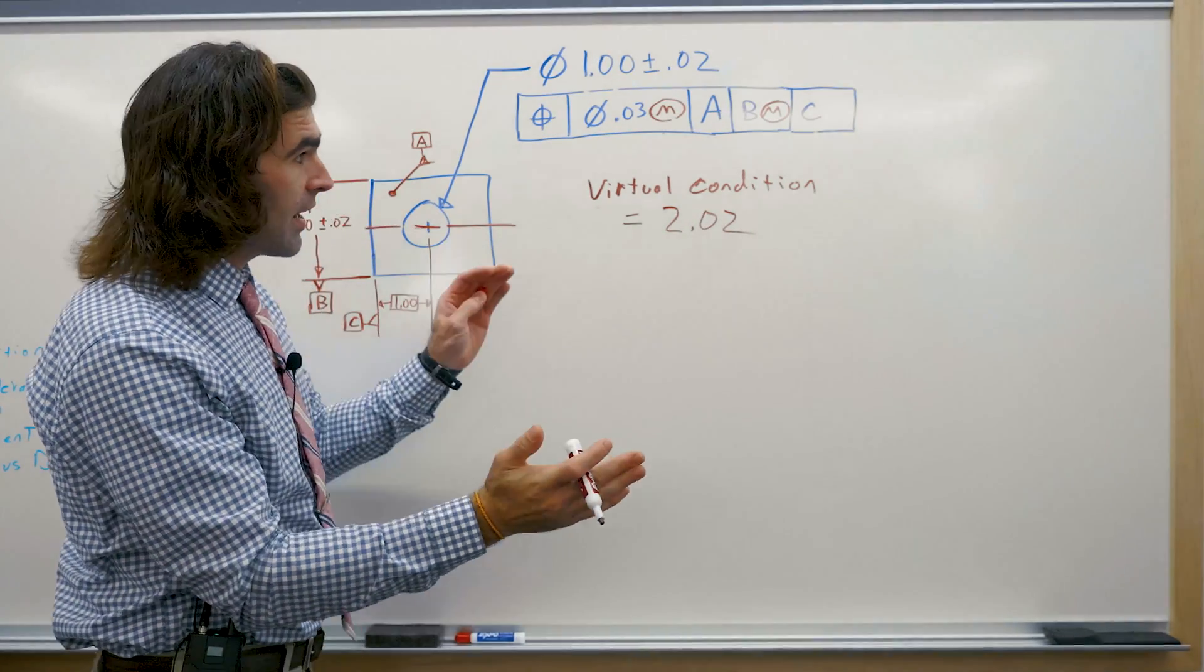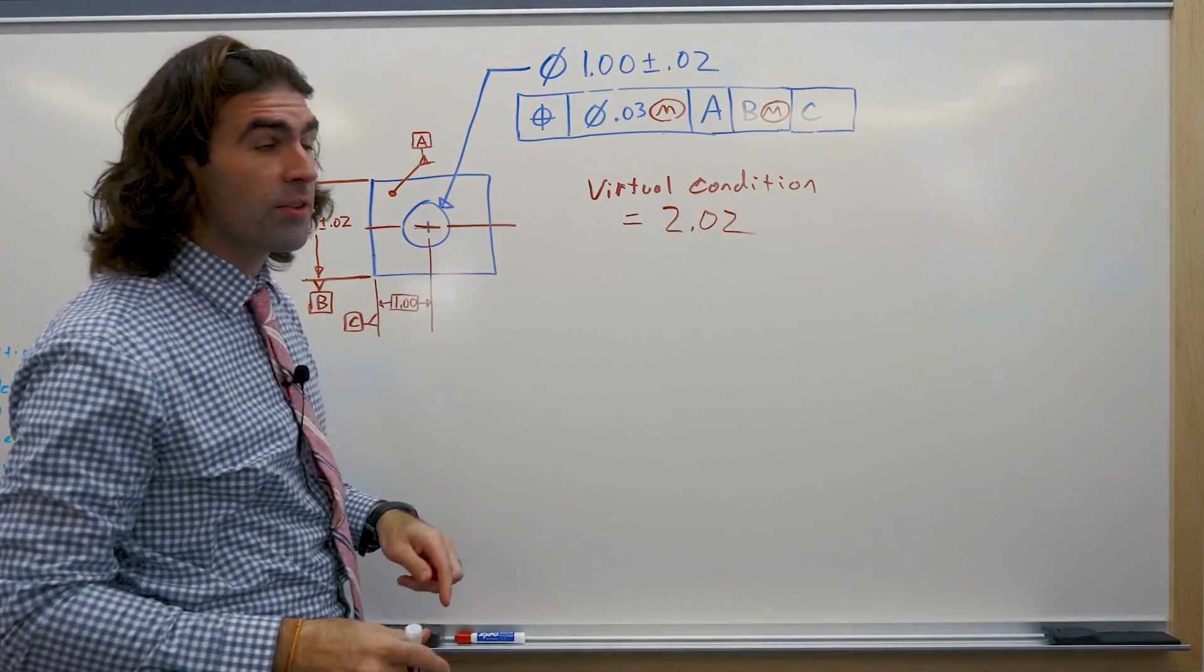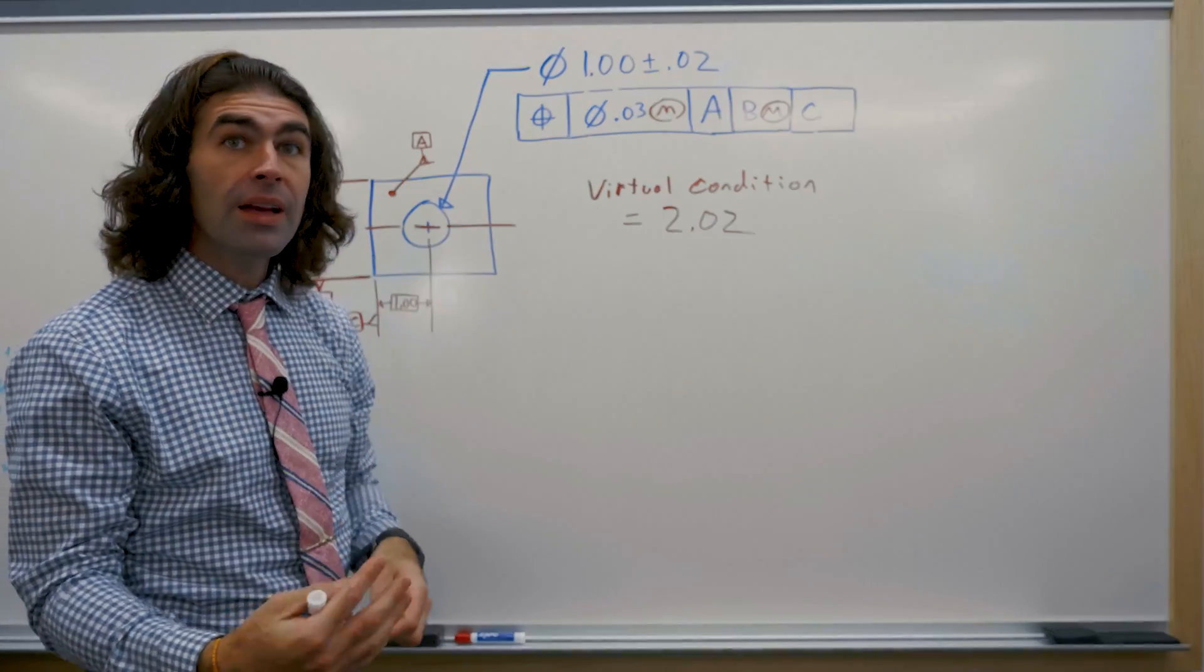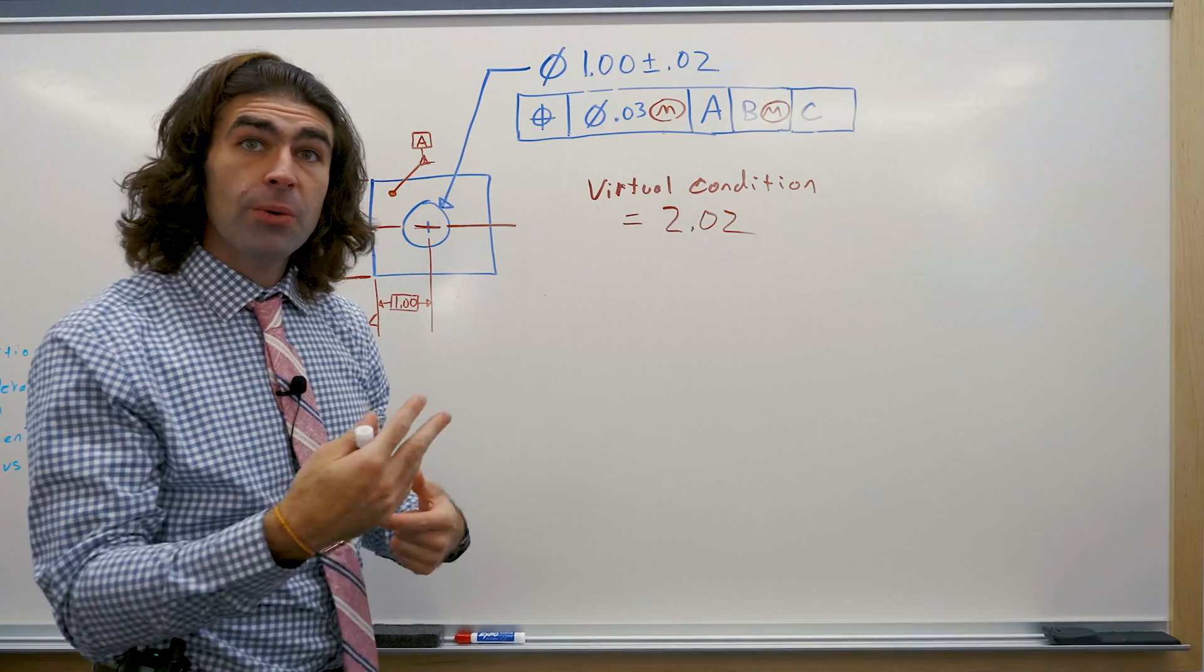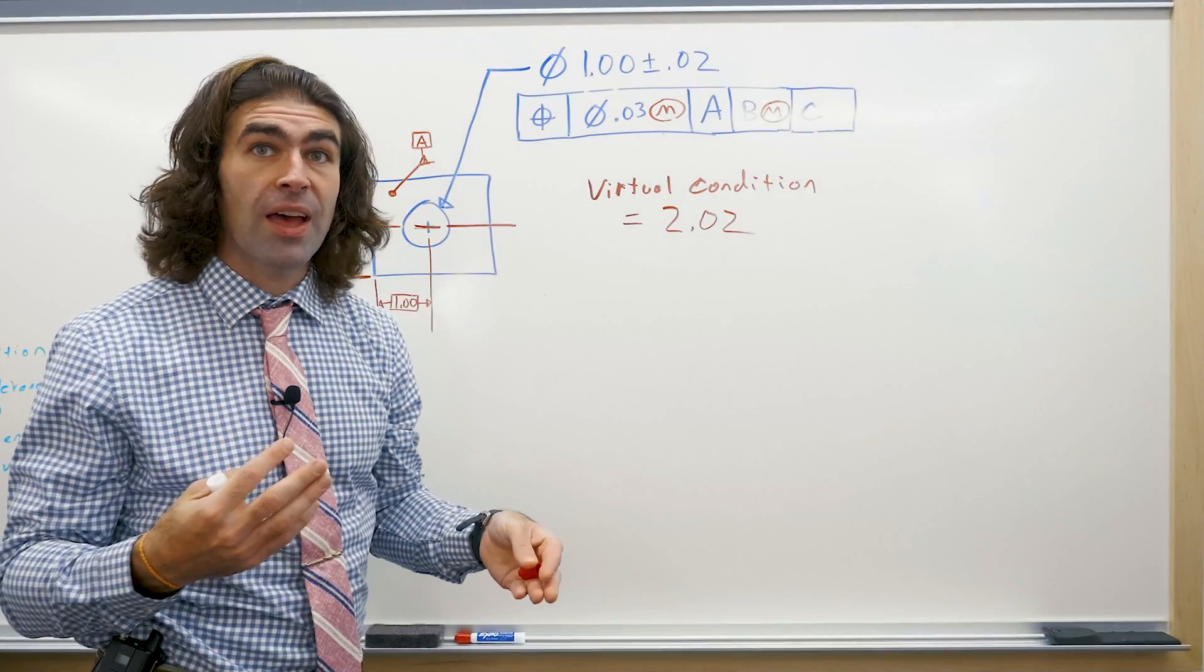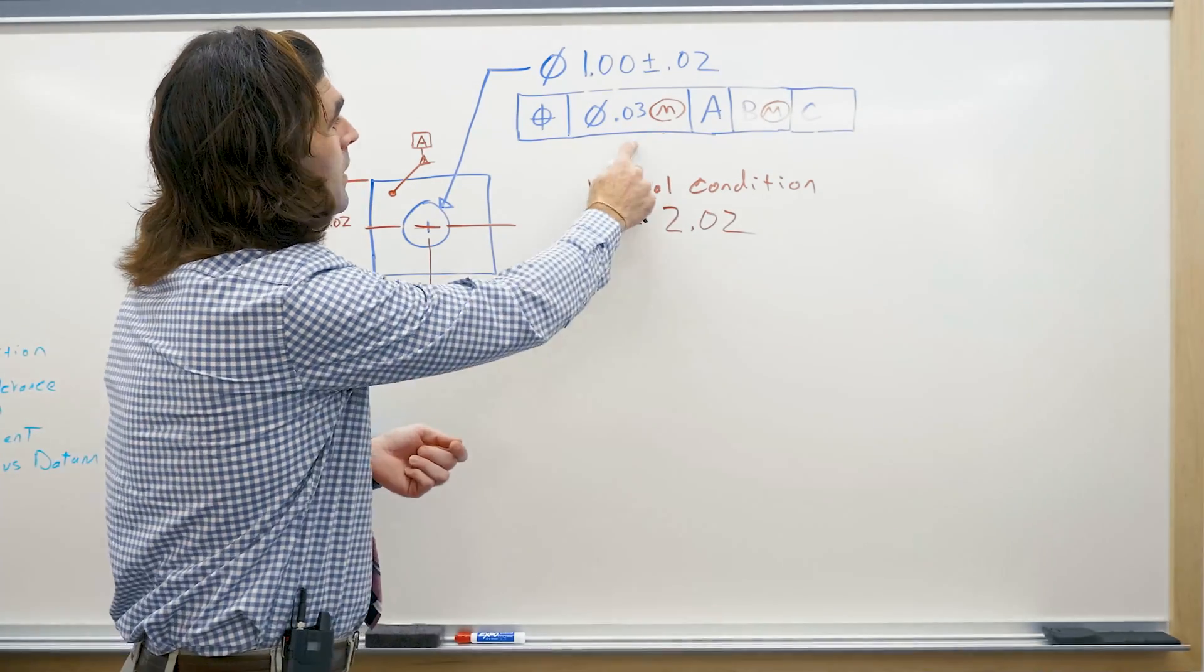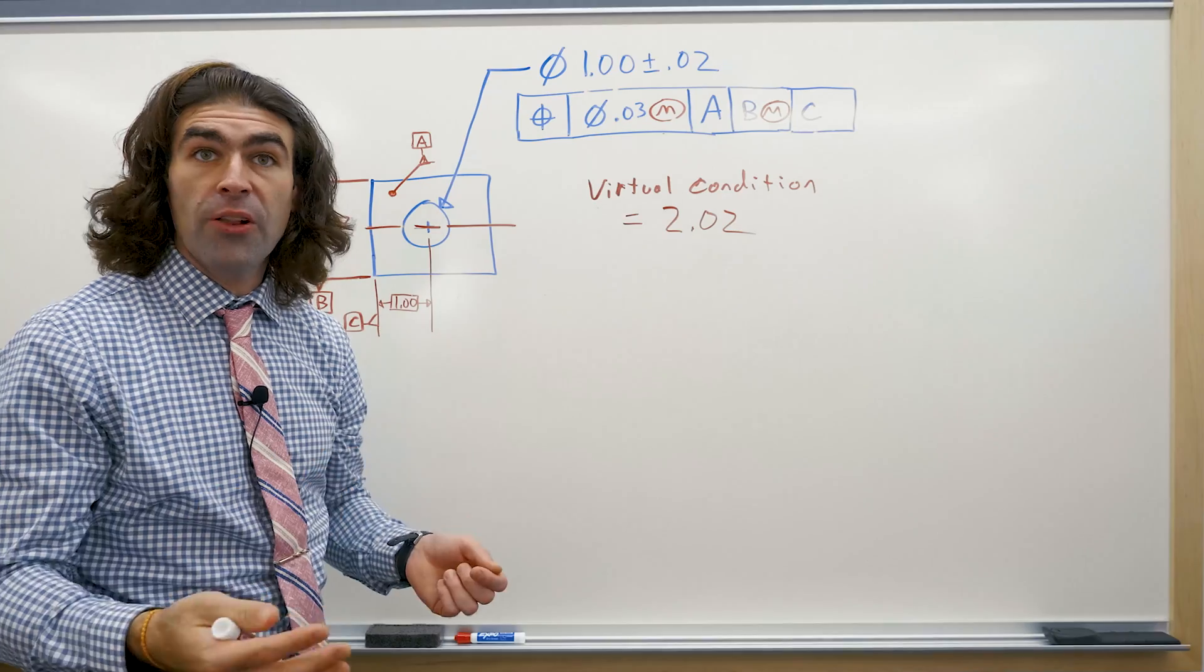But nothing has to collapse on this part. You can have two parallel planes that are set this distance apart and you can measure from them. So what that allows the part to do is wiggle around inside of that fixture so you can get the best measurement and hopefully meet this tolerance.